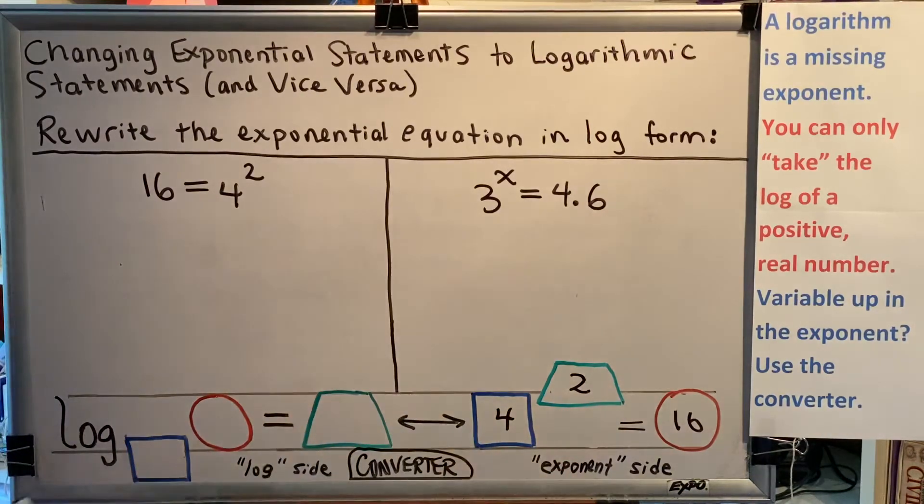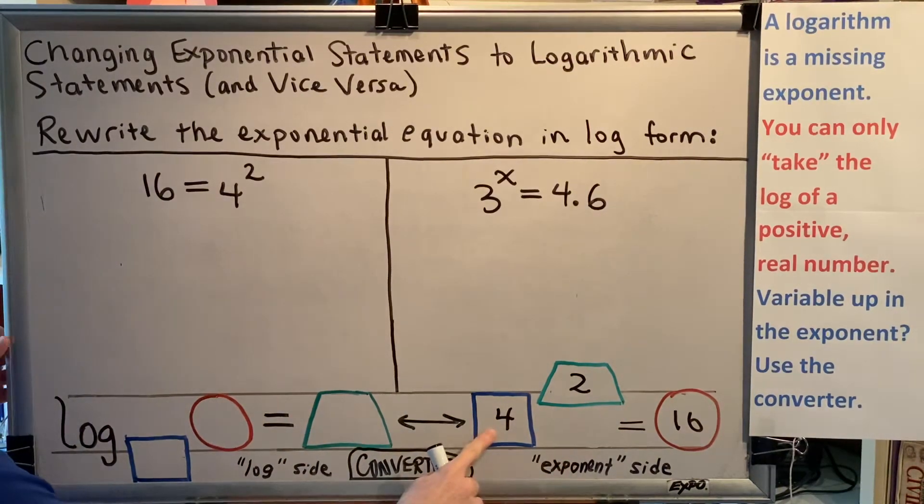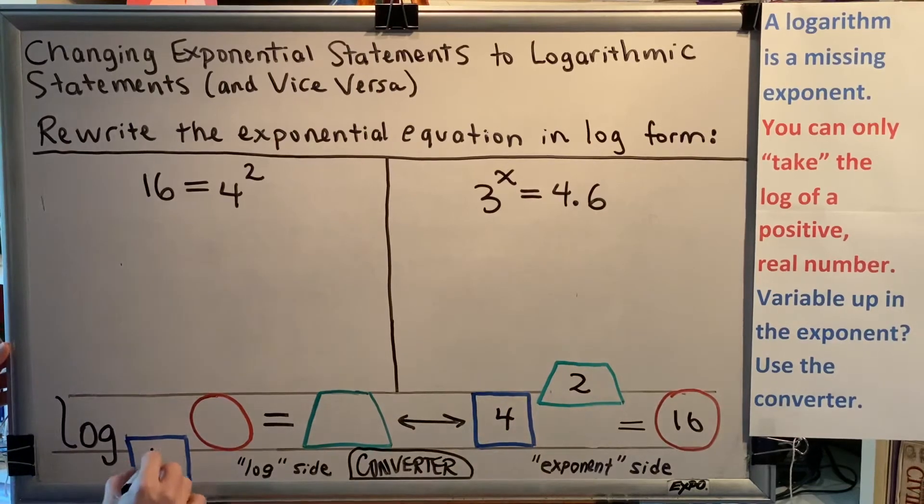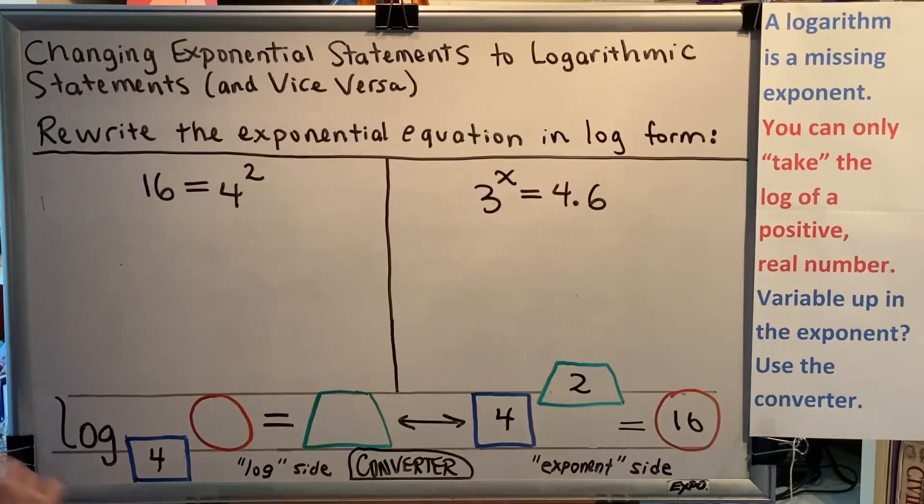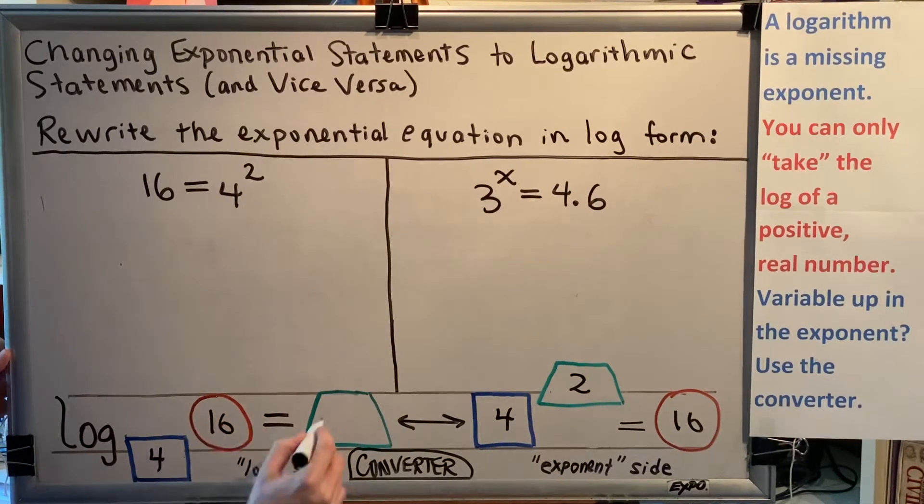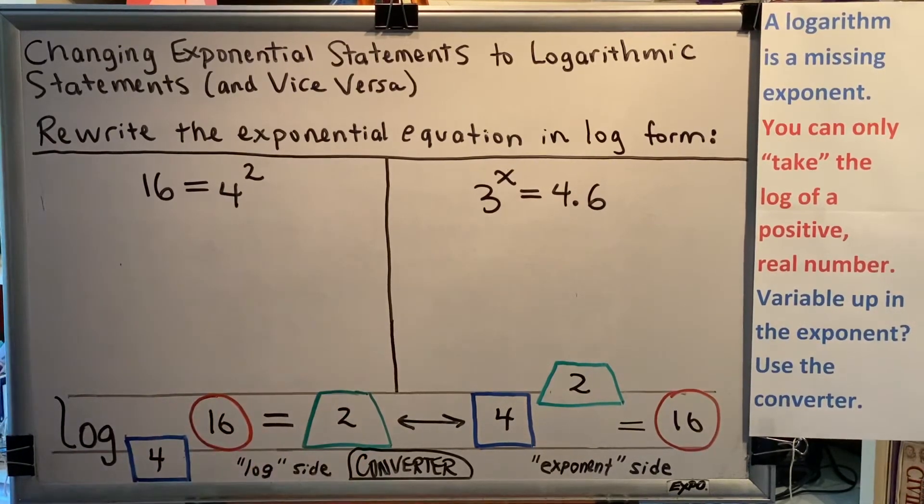Now match up the colors and shapes. Whatever you put on one side you have to put on the other. So since there's a four in the blue box on the right, there must also be a four in the blue box on the left. Similarly, a 16 goes in the red circle and a two goes in the green trapezoid. This gives us the answer to our problem: log base 4 of 16 equals 2.